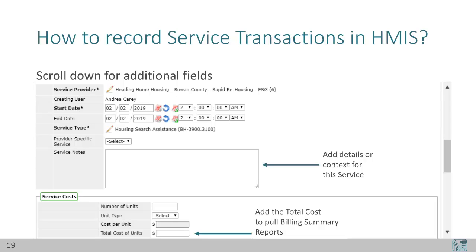Under Service Costs, you can add the total cost of this particular service if you would like to report on costs directly from HMIS. Keep in mind that for rent or other financial assistance, you apply the service to the head of household only. If multiple clients are selected, the amount of assistance would look doubled for two-client households or tripled for three-client households, and so on.